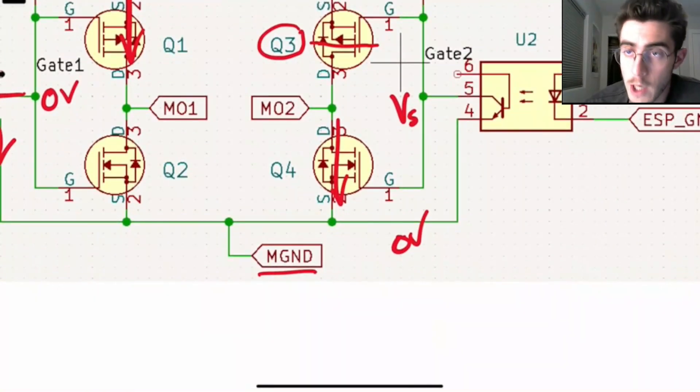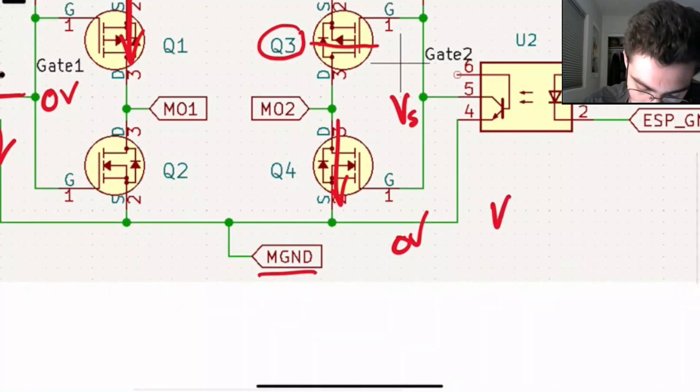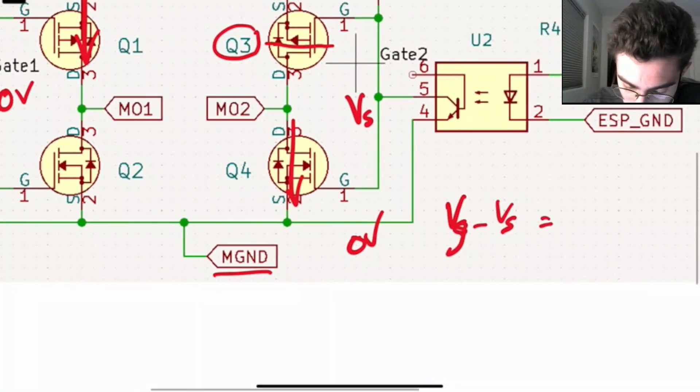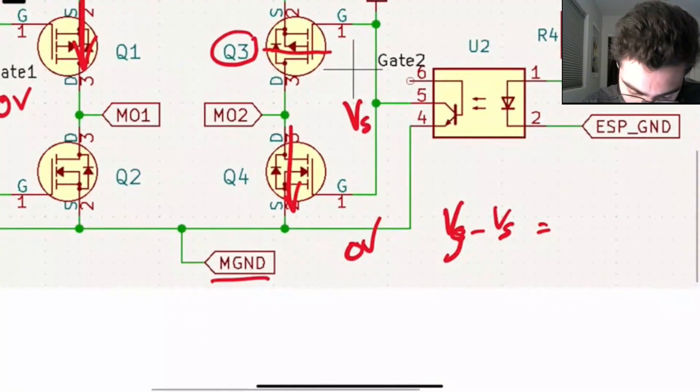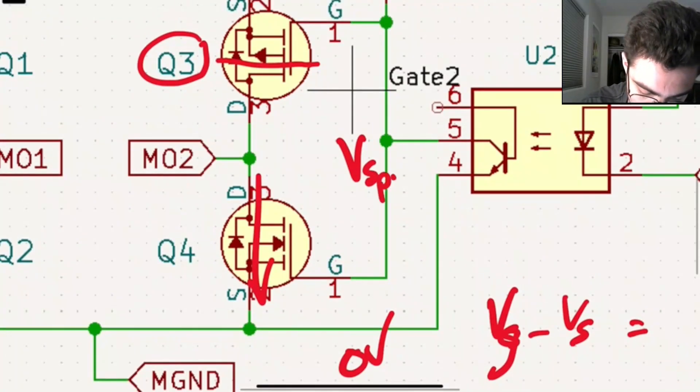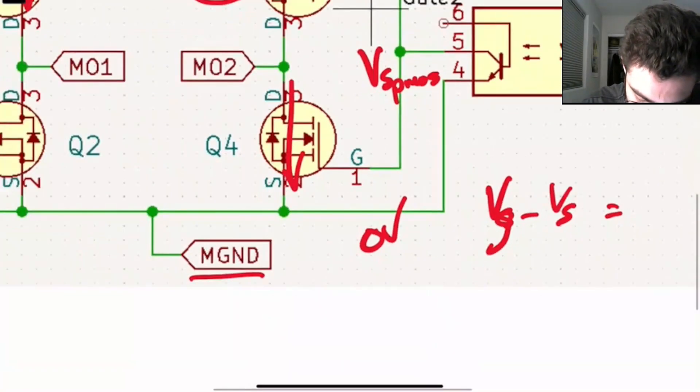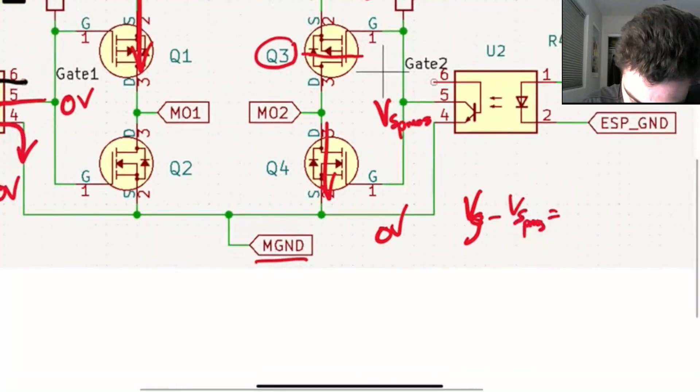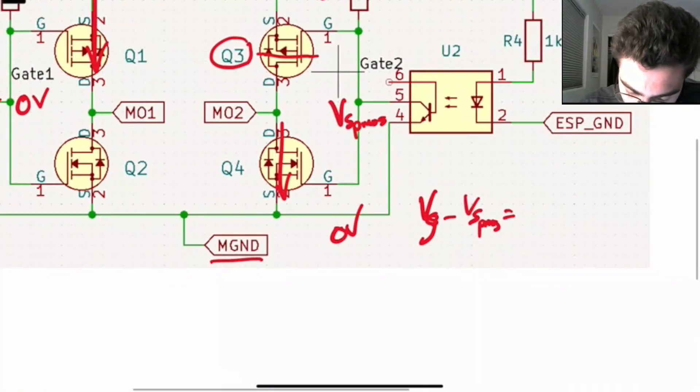However, Q4 will be on, because Q4 is an NMOS. And for NMOS, we have Vs minus, sorry, Vg minus Vs, which is going to be, so I should clarify, this is Vs of the PMOS. So we'll have Vs PMOS is equal to, sorry, I'm getting mixed up here.